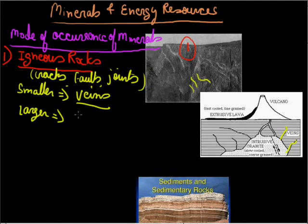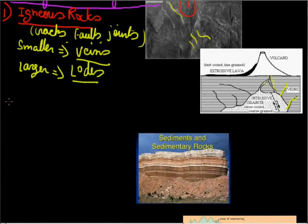The larger ones, when their size is larger, they are called lodes. L-O-D-E-S, lodes. As you can see here, these are lodes. The difference between the lodes and veins is just that the veins are smaller and the lodes are the larger cracks where we find minerals. Let us come to the second place where minerals are found.